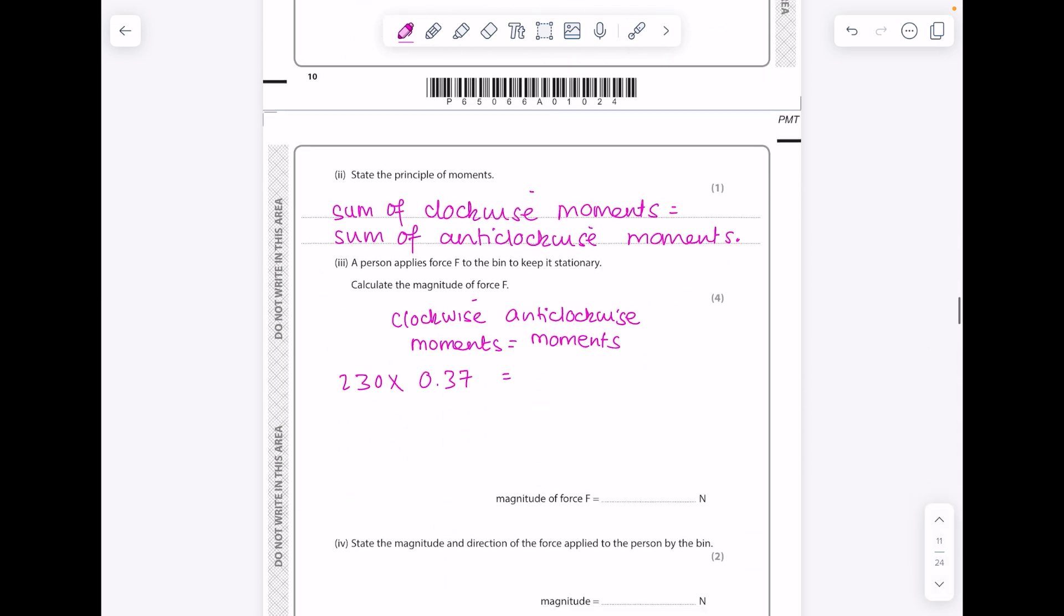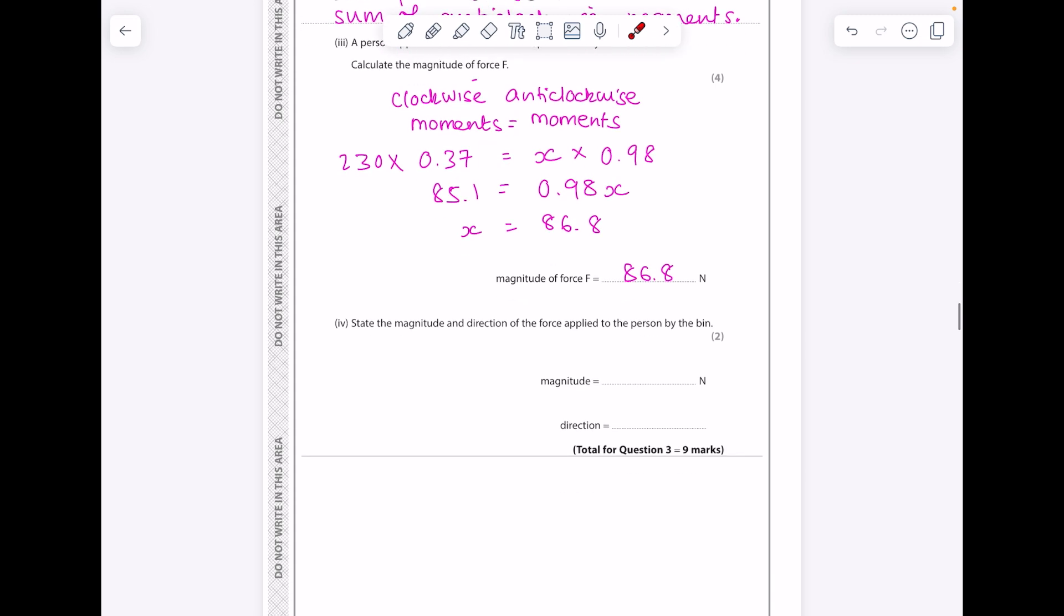What's our anti-clockwise moment? We want the moment acting against the direction of the clock, which will be this force up here multiplied by this perpendicular distance from pivot, which is 98 centimeters. So it's the force F, which we're after, times 0.98 meters. Then just make sure you solve the left and right hand side separately. So 230 multiplied by 0.37 is 85.1, equals 0.98x. Then remember, to solve for x we divide both sides by 0.98 to get 86.8. So you write your principle of moments, you look at the diagram - it doesn't matter if it's a wheelie bin, if it's a spanner, it's always the same. You're going to find your anti-clockwise moments, your clockwise moments, and then solve for x.